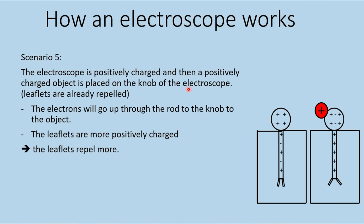So the electroscope is positively charged, the leaflets are already repelling, and then a positively charged object is placed on the knob. The electrons go up through the rod to the knob, attracted by the positive object, leaving the leaflets with a stronger positive charge — resulting in stronger repulsion.